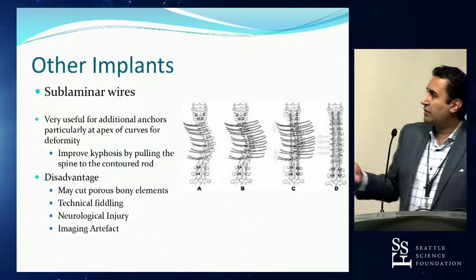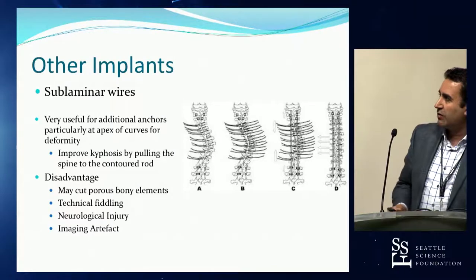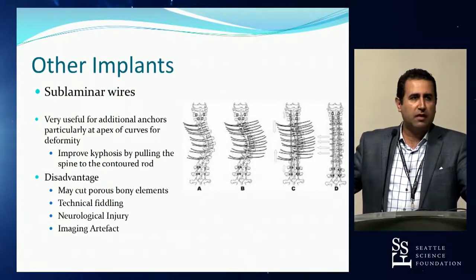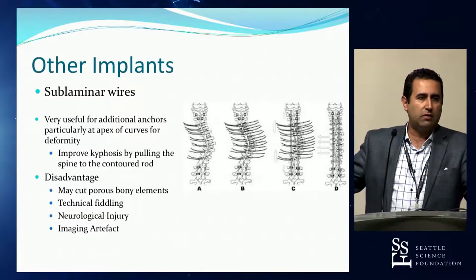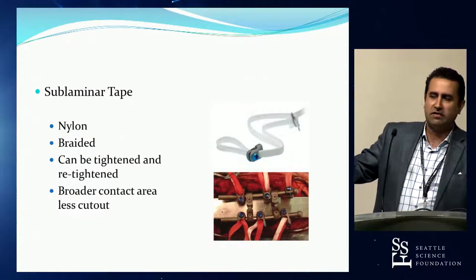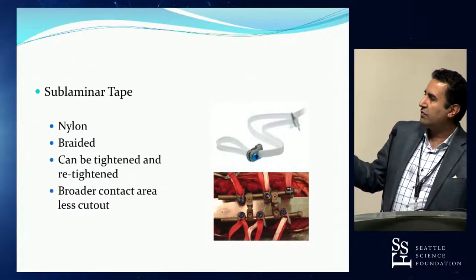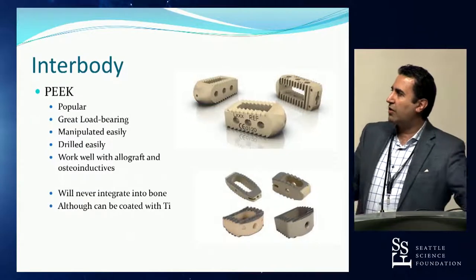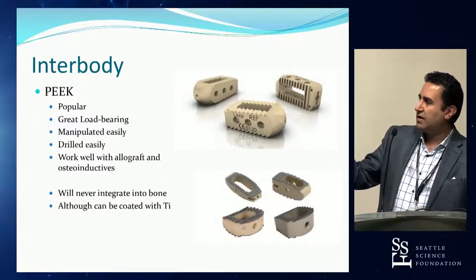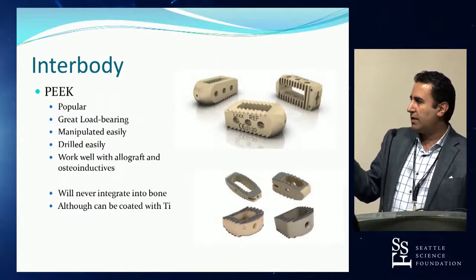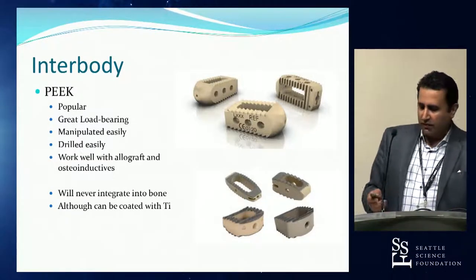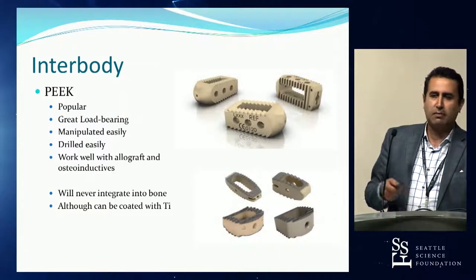Sub-laminar wires can supplement deformity correction — their goal is to improve kyphosis by pulling the spine to the contoured rod. Disadvantages include cutting through bone, impacting neurological elements, and producing imaging artifact. Braided polyethylene tape, such as universal clamp, can help avoid some of these issues. Interbodies also play a big role with respect to the disk space. The field is moving away from implants with large windows for bone formation and toward surface properties that allow osteointegration of the implant into the bone.